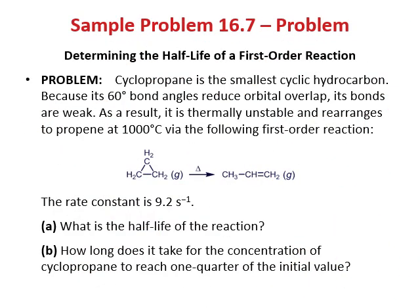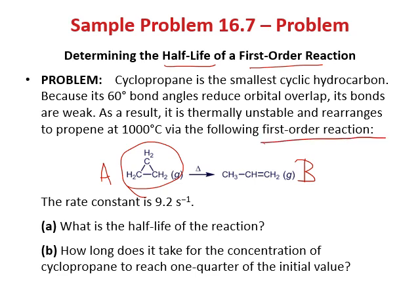Sample problem 16.7. We have cyclopropane, which at high temperature isomerizes to propane. This reaction is first-order, with rate constant k given as 9.2 per second. The question asks for the half-life.